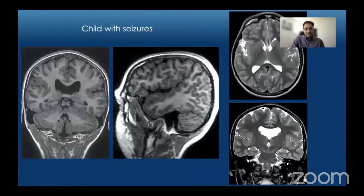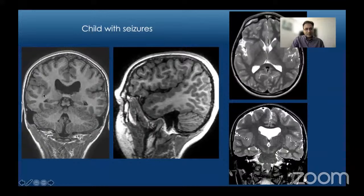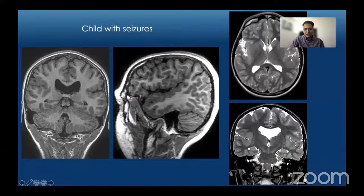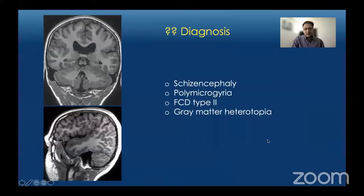Moving to case number three: a child who presented with seizures. On coronal and sagittal T1 MPRAGE sequences we see abnormally thickened and lobular-appearing cortex in the right and left perisylvian regions. On the sagittal images there is an abnormally deep sylvian fissure extending all the way up to the vertex, lined by thickened lobular cortex. On T2-weighted images we see abnormally thickened and lobular cortex in bilateral perisylvian regions, and absence of septum pellucidum. The diagnosis is bilateral perisylvian polymicrogyria.